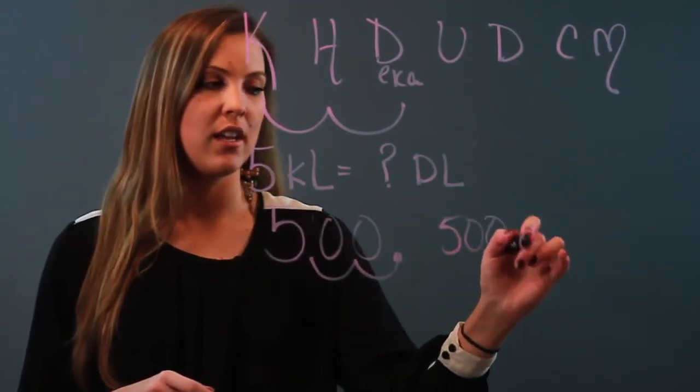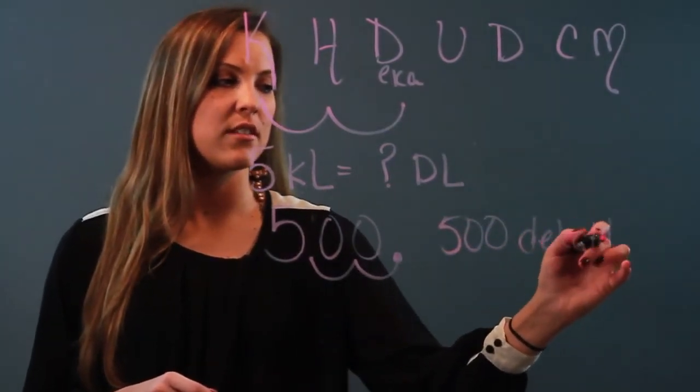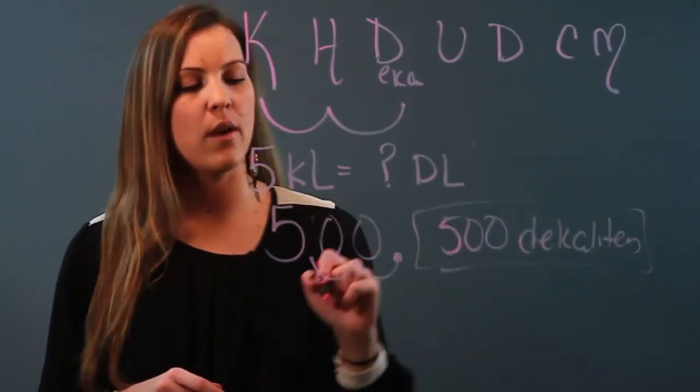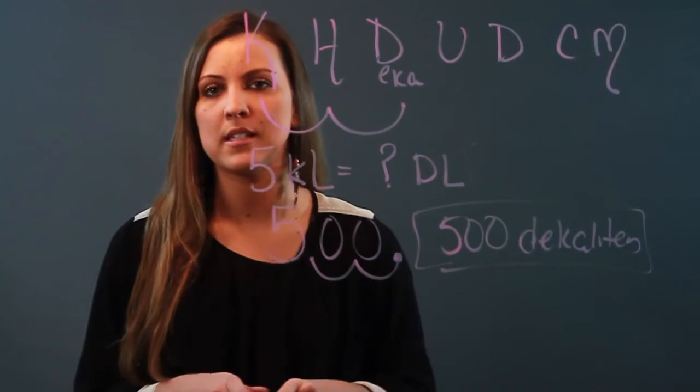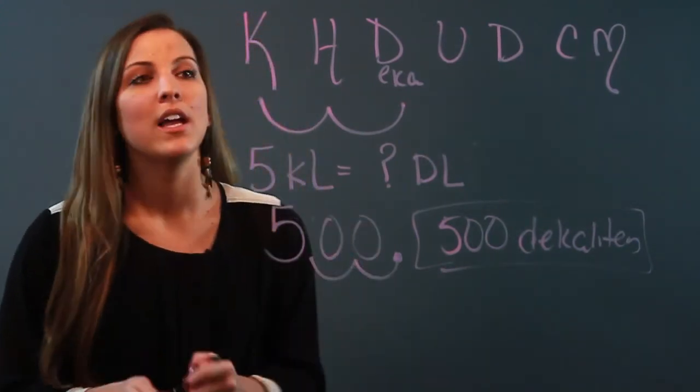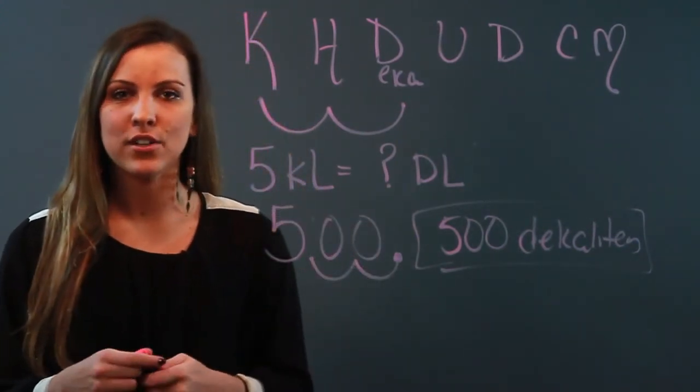So what did I do? I actually multiplied, but the easier way to look at it is just go ahead and move two decimal spaces over to the right. When you convert from kiloliters to decaliters, you multiply.